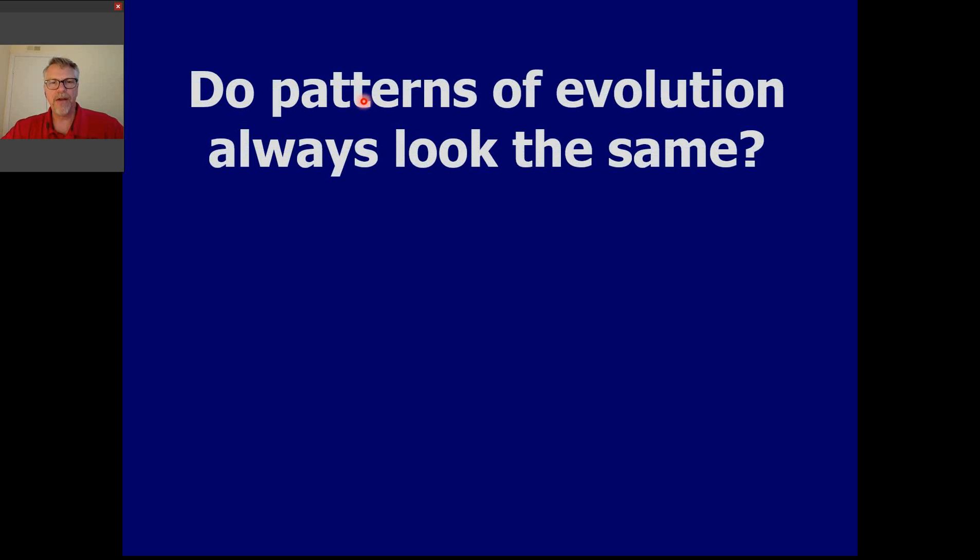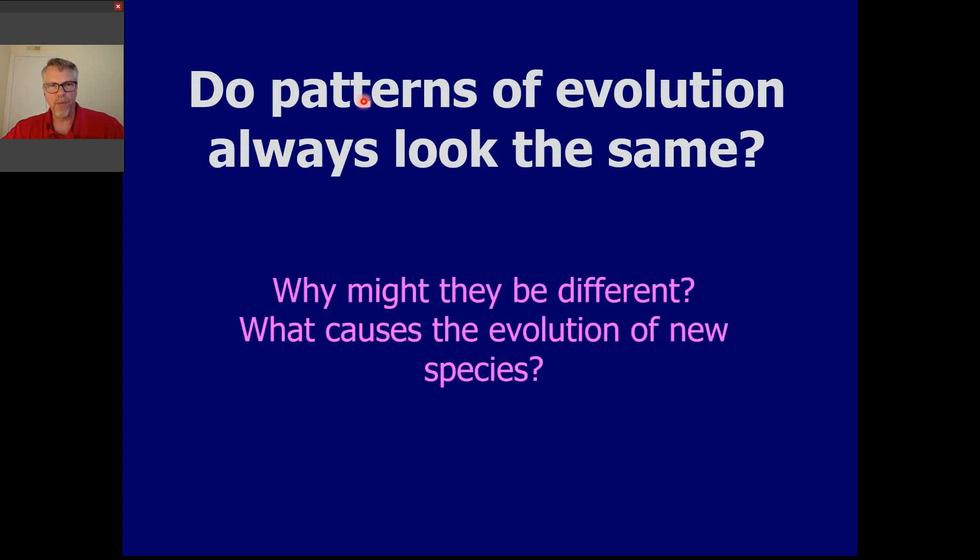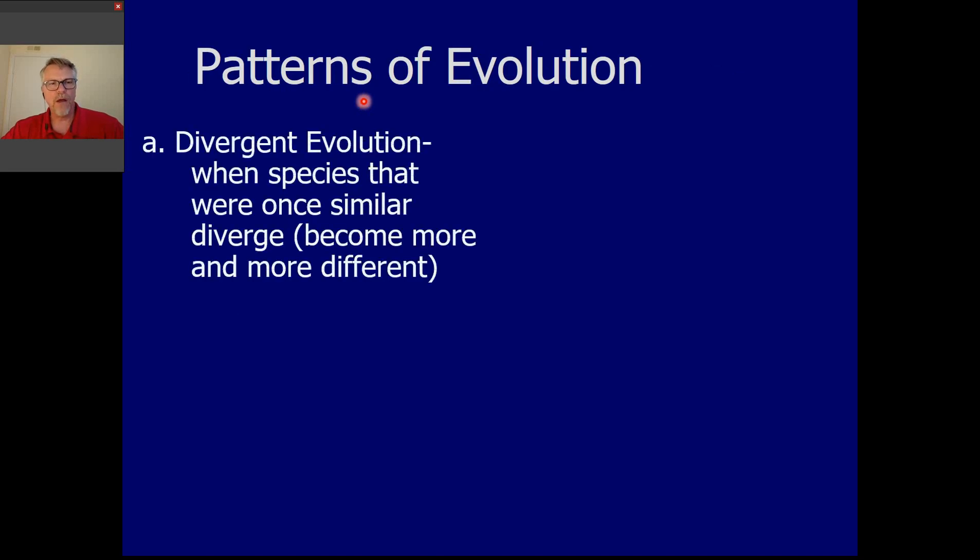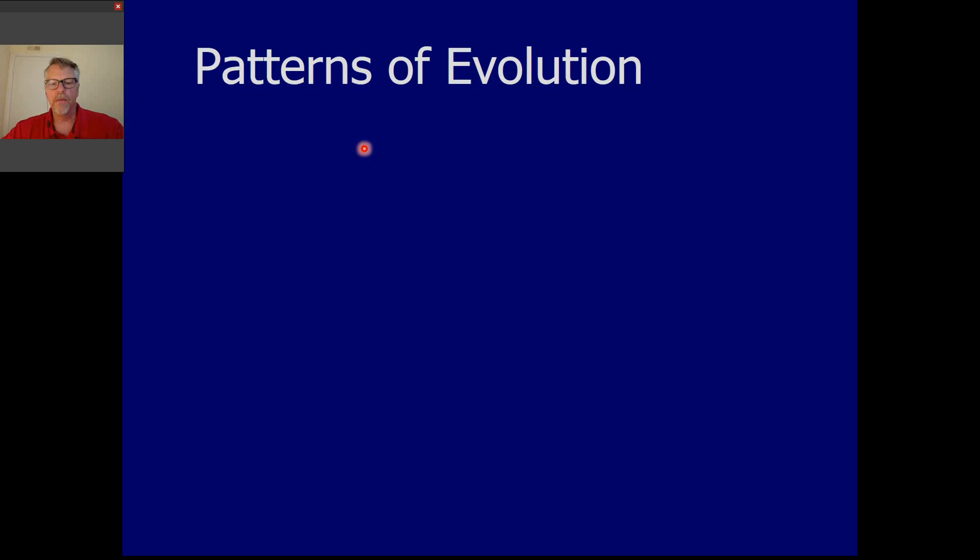Alright? So lastly, let's talk about patterns of evolution. What is, how does evolution look? And then how, why might those be different? Okay? So we have a couple. The first is something called divergent evolution. And this is probably what you think of most commonly when you talk about evolution, where species that are similar or organisms that are similar kind of gradually grow further and further apart. They become more and more different over time. So that's called divergent evolution. That's one type of evolution pattern that you see.